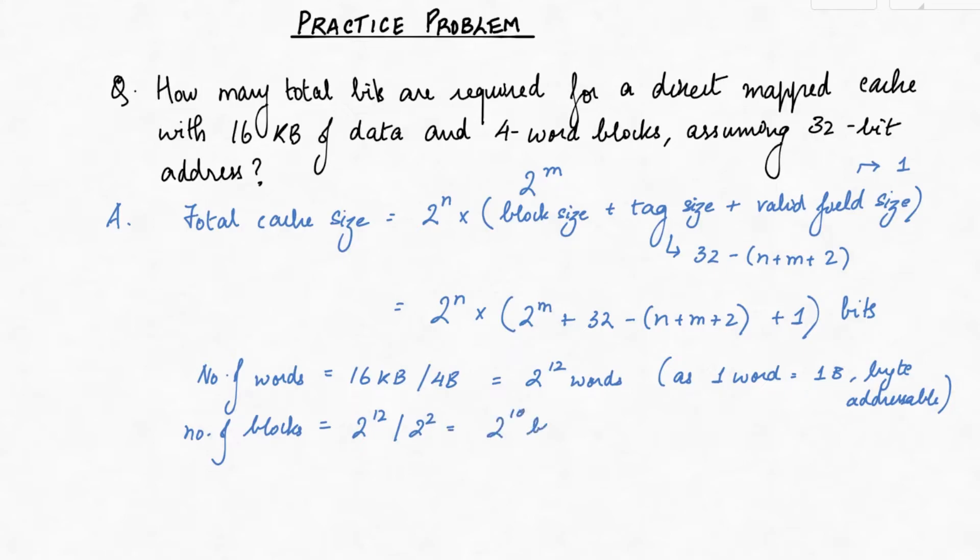Each block also has 4 words multiplied by the 32 bit address which results in 128 bits of data. We have gotten the values of n and m, which are 10 and 2 respectively.